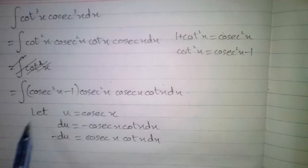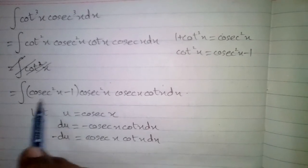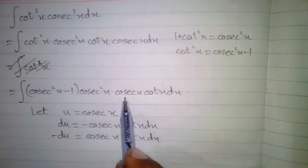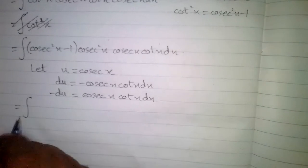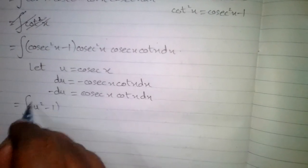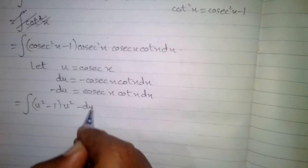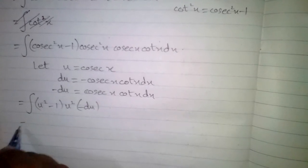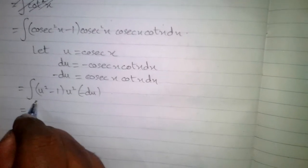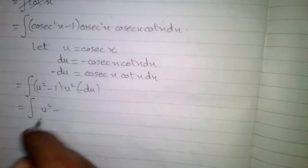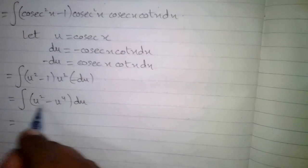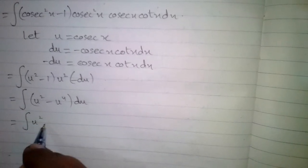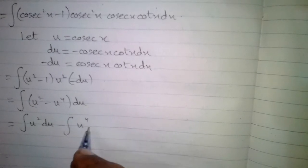Now we can write u in place of cosec x, and in place of cosec x cot x dx we write minus du. So the above integral can be written as the integral of u square minus 1 times u square times minus du, and after simplifying this expression we have the integral of u square minus u to the power 4 du. We split this as integral of u square du minus integral of u to the power 4 du.